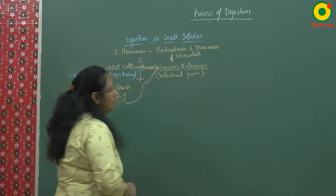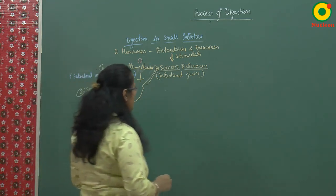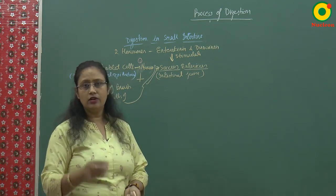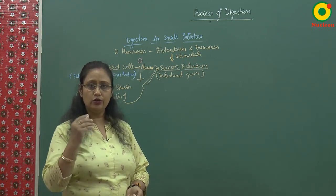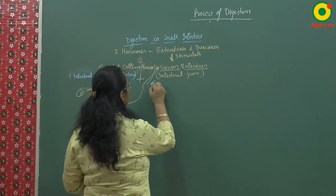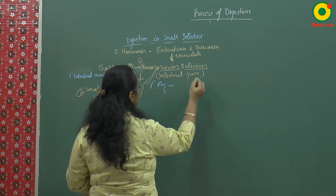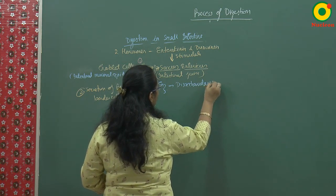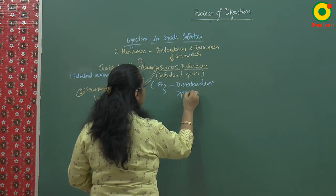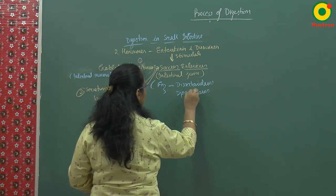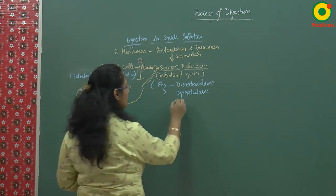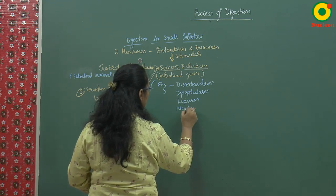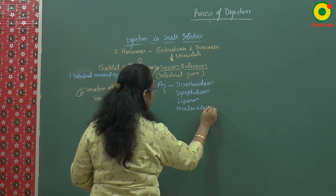Succus entericus contains around 99% water and approximately 1% enzymes. The few enzymes present in succus entericus are: disaccharidases, lipases, dipeptidases, and nucleosidases.